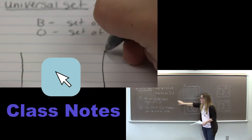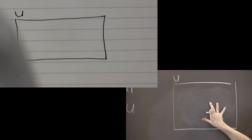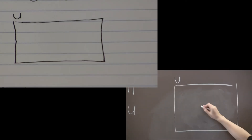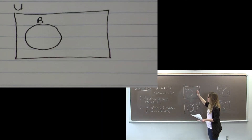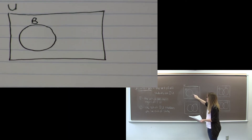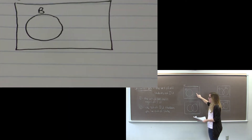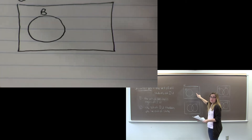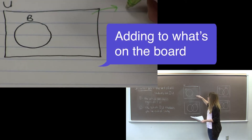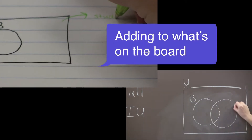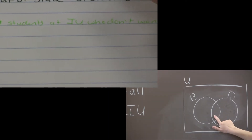So now our job is to represent B and O inside of this rectangle, because inside of this rectangle is going to represent all the students at IU. We'll start by drawing the set B — we'll represent it as a circle. We need to draw this circle B like this, because we need a region outside of B that would represent the set of students at IU who don't want to major in business. We'll draw the set O — the set of IU students who live out of state — so it has some overlap with B, but isn't completely overlapped with B.